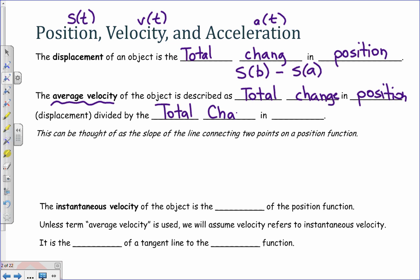We know this in algebra, and we talked about this as being slope. So it's the change in the y values over the change in time. So the change in S of B minus S of A, that's its position, over its time. And we can think of this as the slope of connecting two points on a position function, like the slope of a secant.